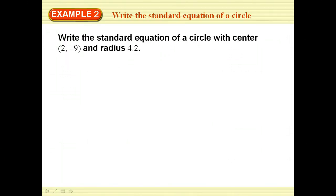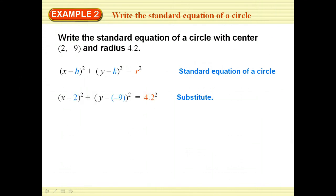Write the standard equation of a circle with a center of (2, −9) and a radius of 4.2. I take x minus h squared plus y minus k squared equals r squared and plug in h, k, and r, then simplify. So: x minus 2, quantity squared, plus y plus 9, quantity squared — notice subtracting negative 9 is adding 9 — equals 4.2 squared, which is 17.64. There is the equation.